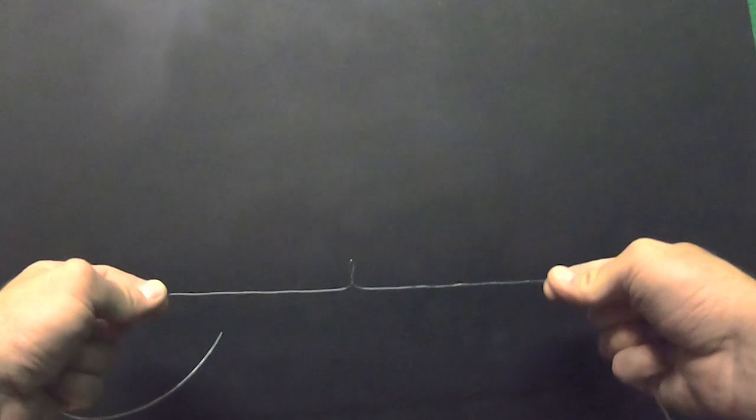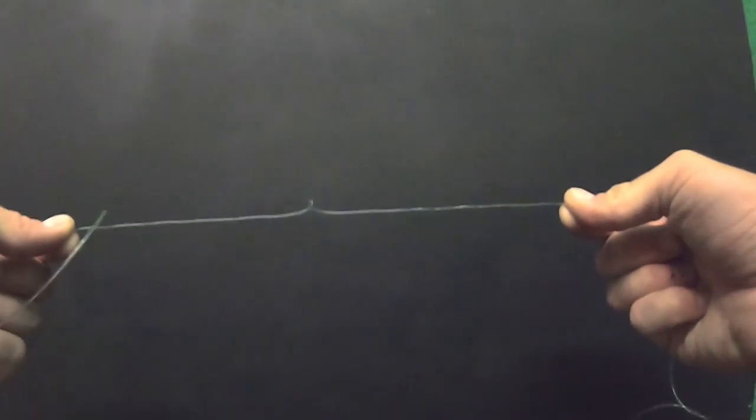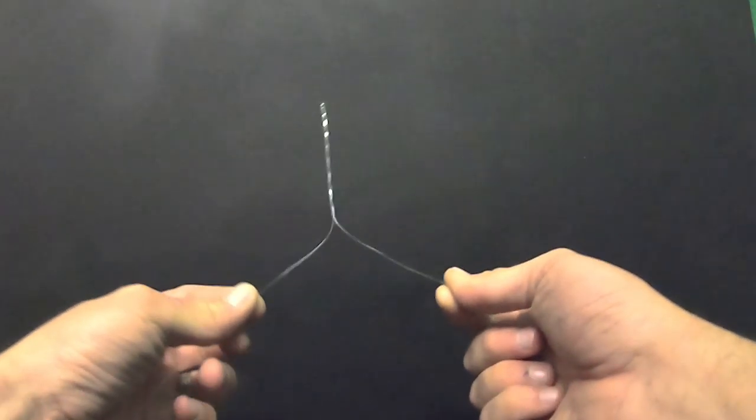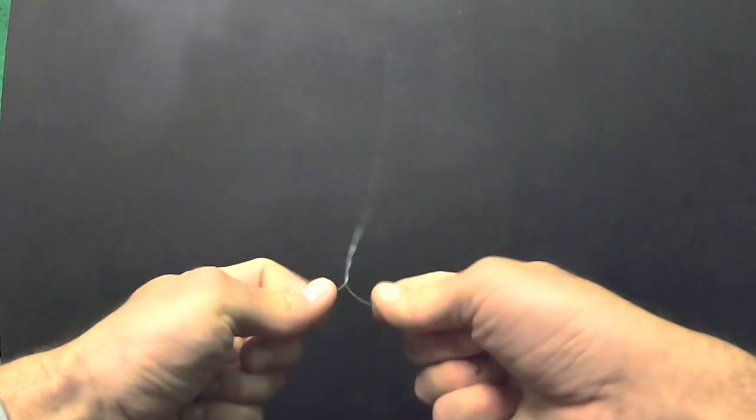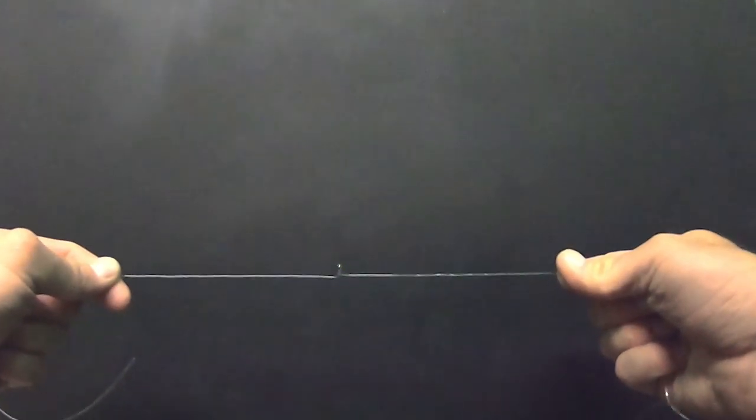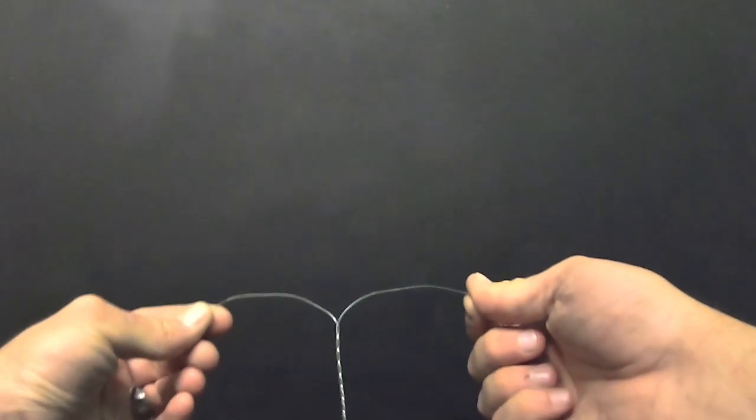And pull it tight all the way and then let it go again, and then make another couple of wraps and pull it tight and let it go.